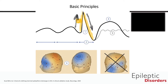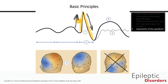The third criterion is looking for asymmetry of the waveform. The point of asymmetry is that the upslope and downslope are not of equal steepness, i.e., one is steeper than the other. This is highlighted by the orange line in the diagram, where the upslope of the discharge is steeper when compared to the downslope.